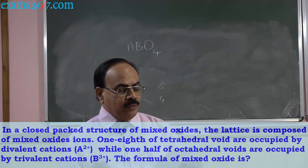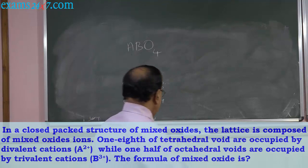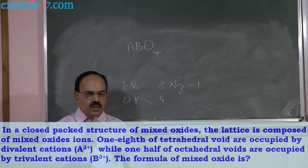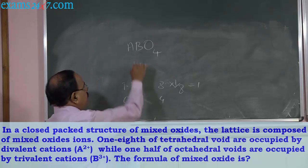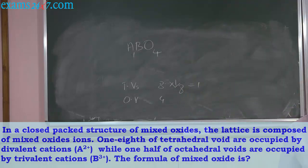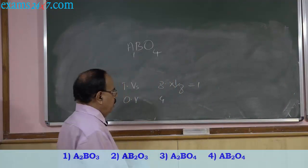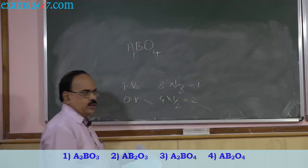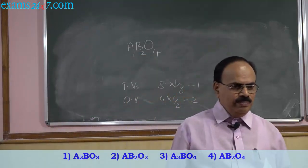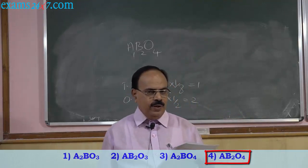One-eighth of the tetrahedral voids are occupied by A. There are 8 tetrahedral voids; one-eighth of 8 is 1. So only one A is in the unit cell. Half of the octahedral voids are occupied by B. Half of 4 octahedral voids is 2. Therefore B = 2. Hence the formula is AB₂O₄.